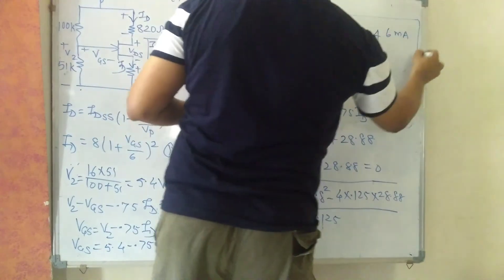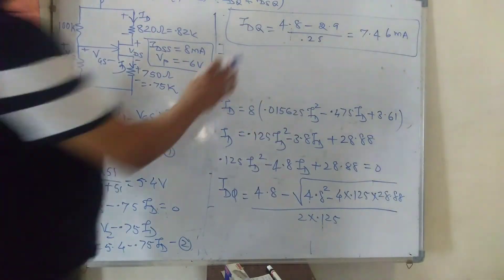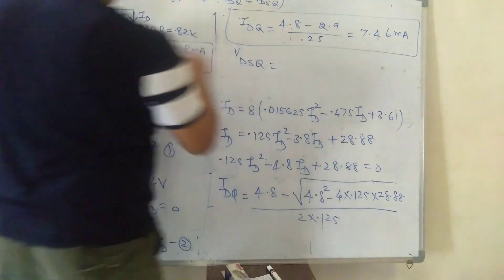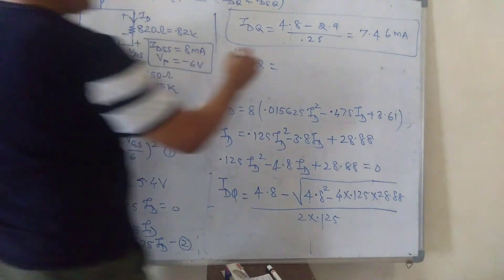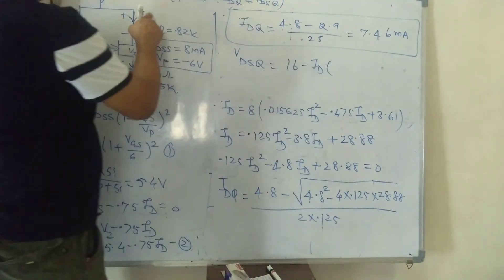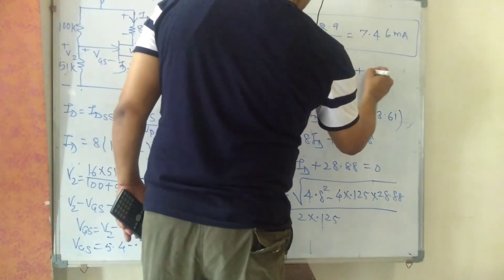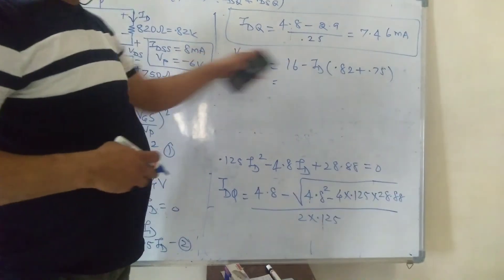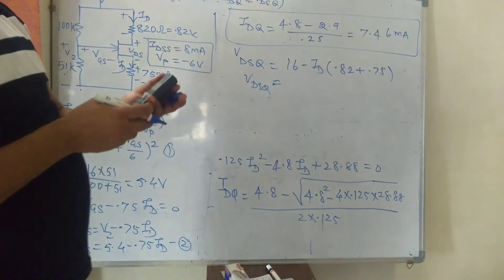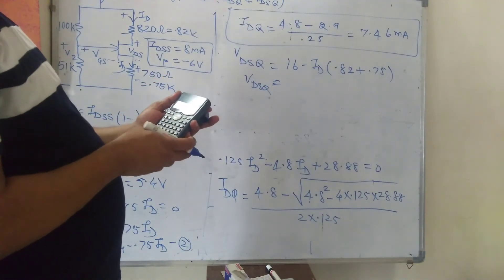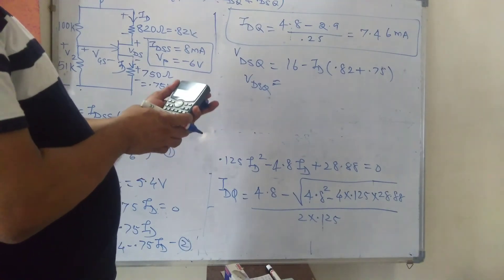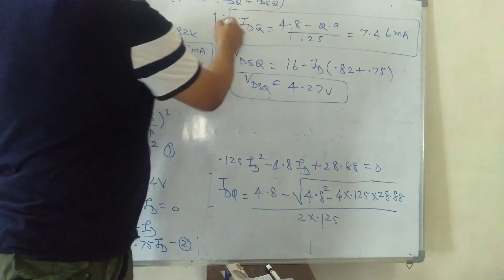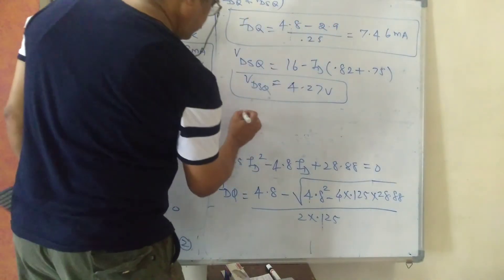The second answer is VDS. From the output loop KVL, VDS = 18 − ID·(1.8 + 0.75). Putting in ID = 7.46 mA gives VDS = 2.9 V approximately. So the Q point is ID = 7.46 mA and VDS = 2.9 V.